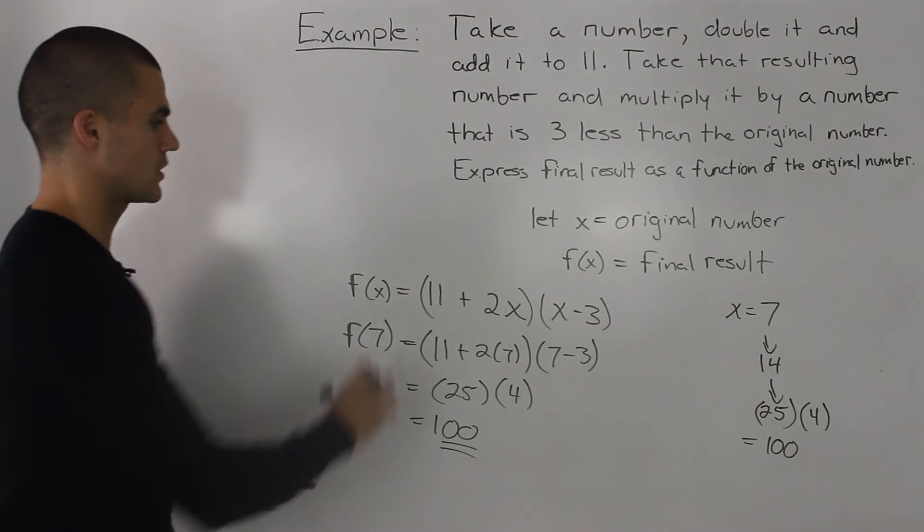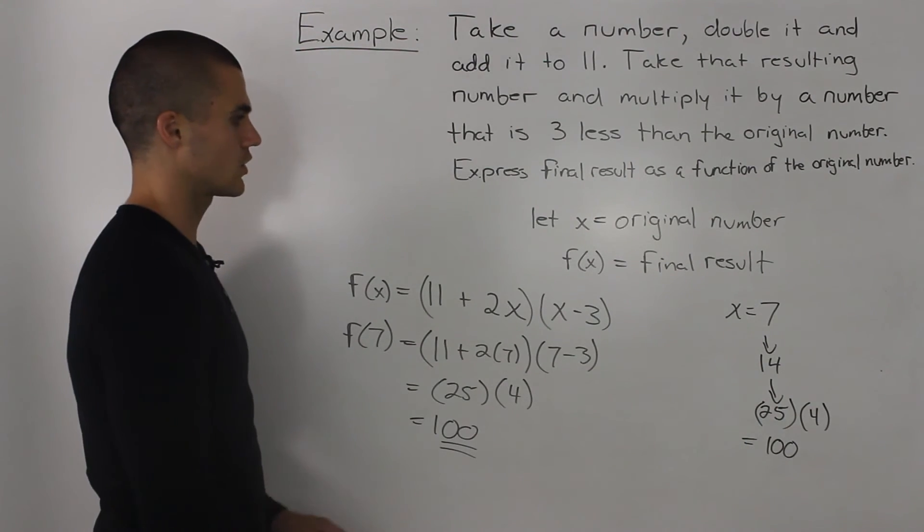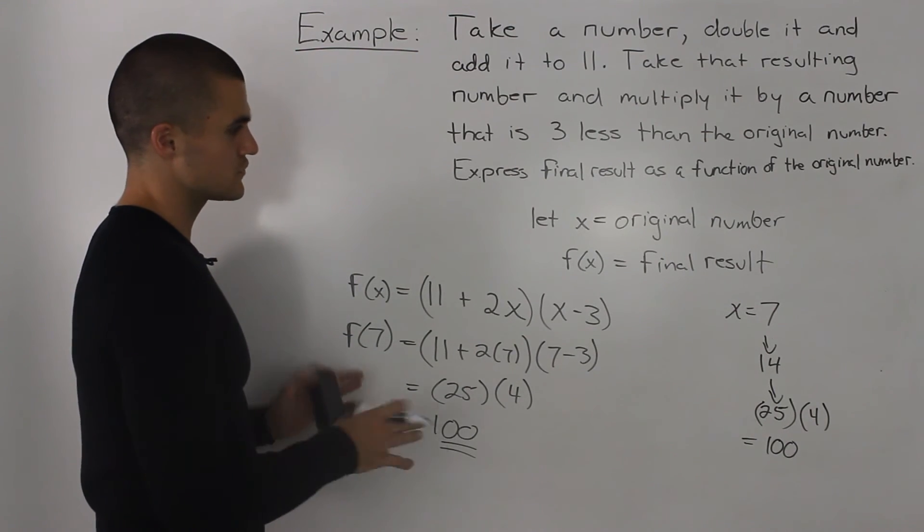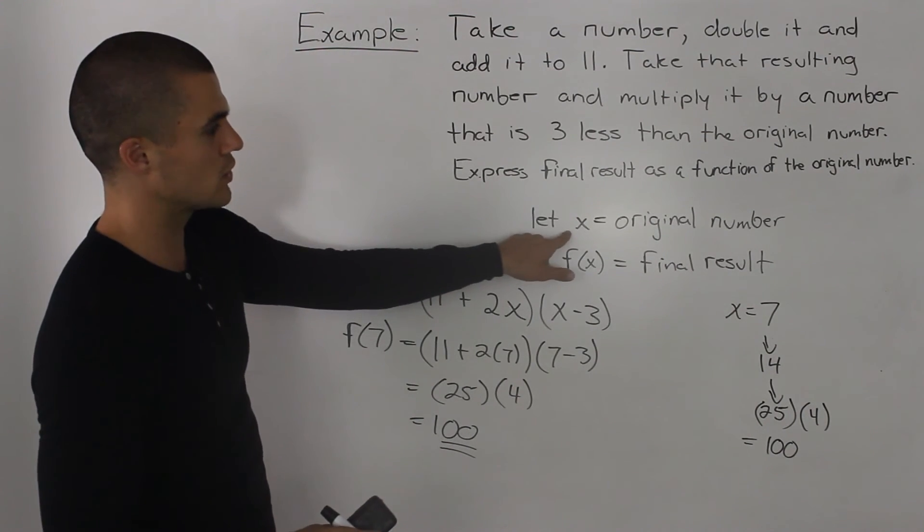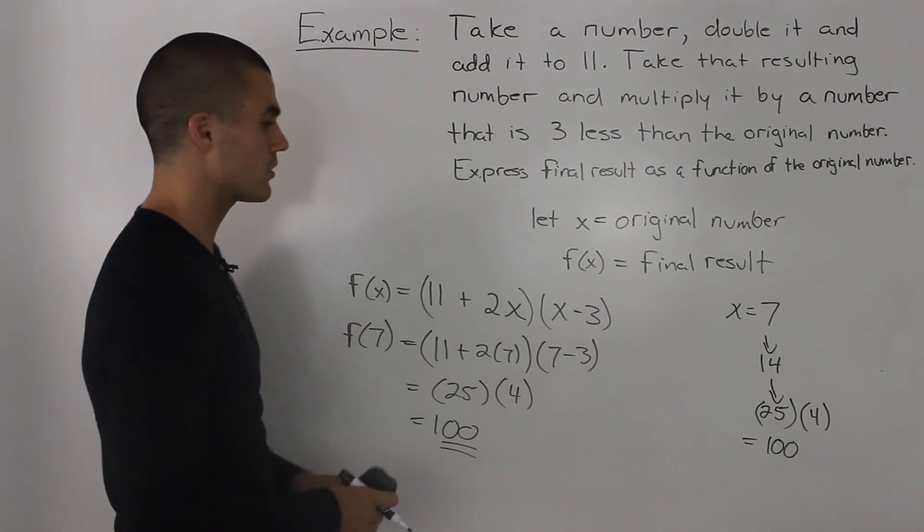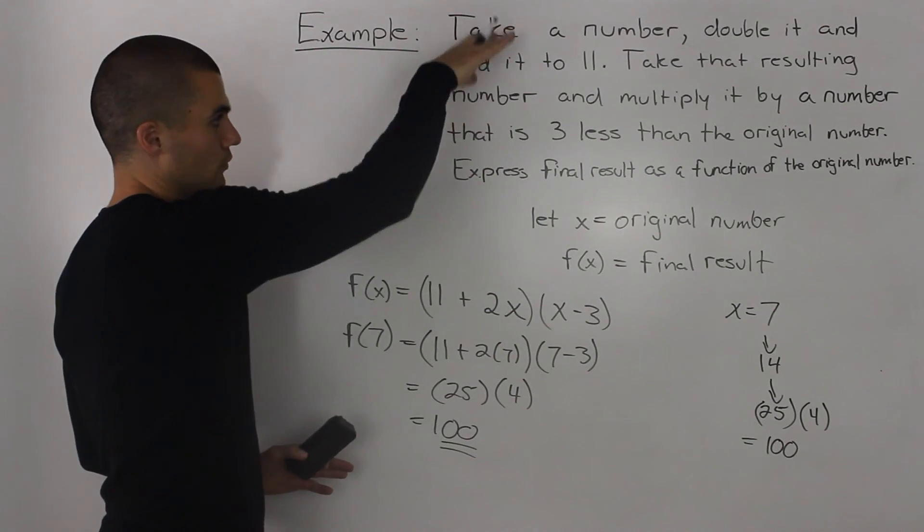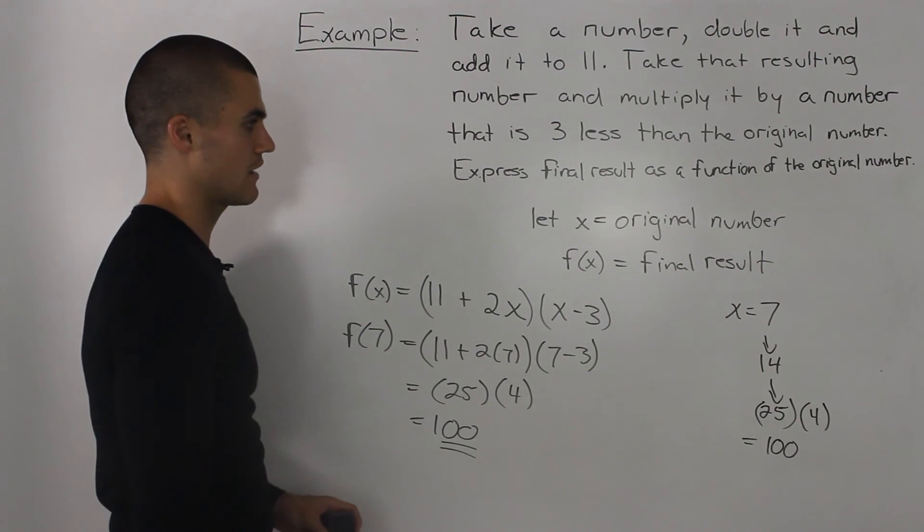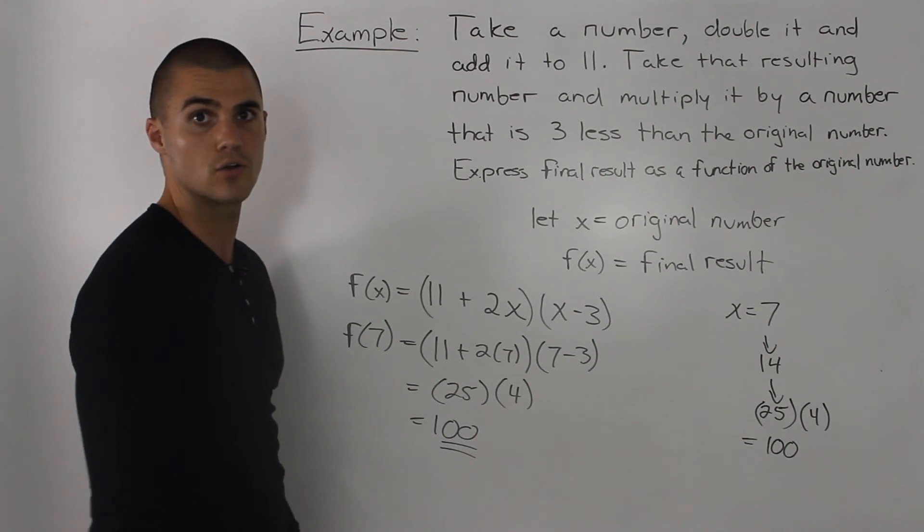So, we know our function is correct. You'll probably run into a couple of these types of questions in your book. So, just follow the same process, introduce a variable, make it equal to the original number, and then just follow the words carefully, and then make a function that describes the final result.